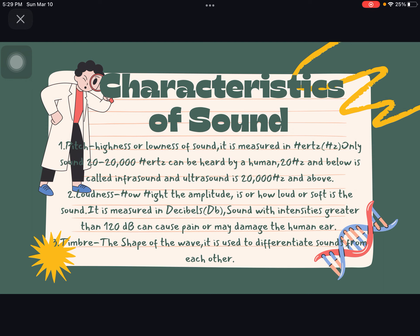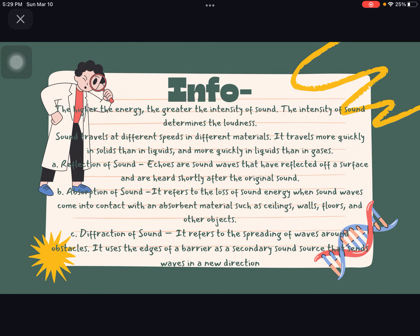Three, timbre: the shape of the wave. It is used to differentiate sounds from each other. Additional info: the higher the energy, the greater the intensity of the sound. The intensity of sound determines the loudness. Sound travels at different speeds in different materials. It travels more quickly in solids than in liquids, and more quickly in liquids than in gases.